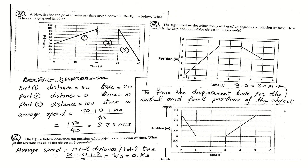Remember: displacement is the difference between the endpoint and the starting point, taking direction into consideration. Problem six: the figure below describes the position of an object as a function of time. Moving up means north and moving down means south. What is the average speed of the object in 5 seconds?